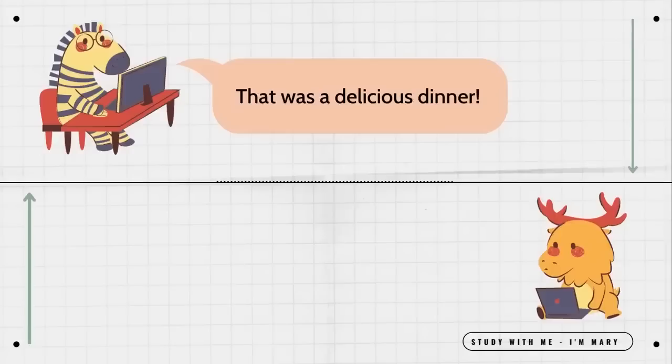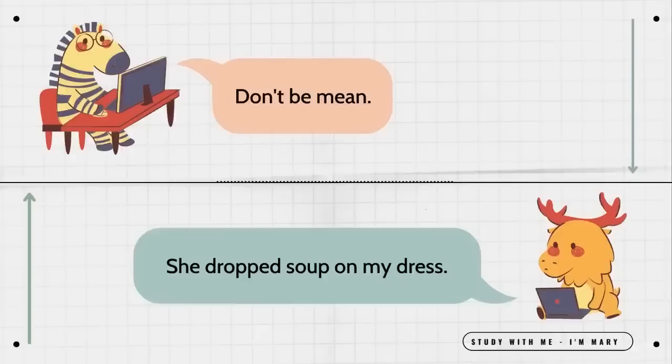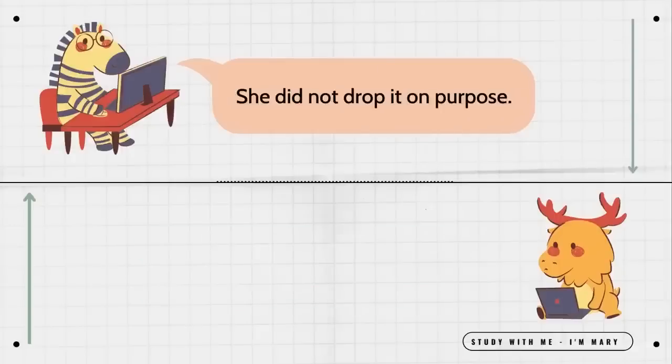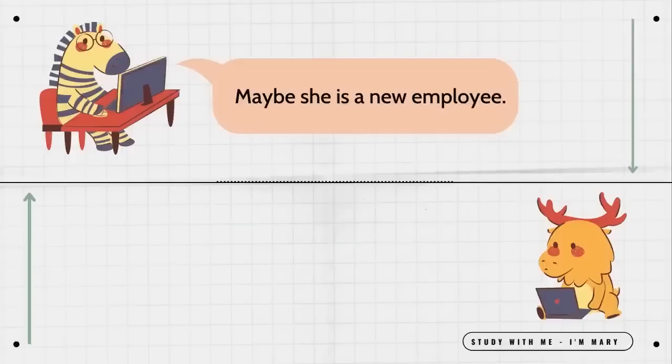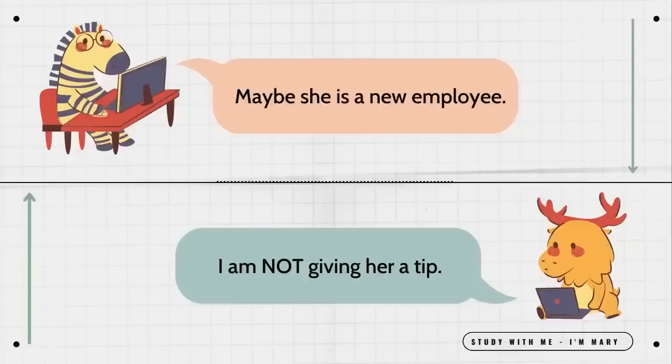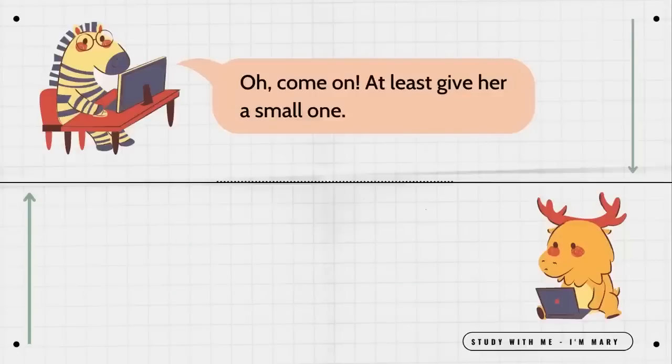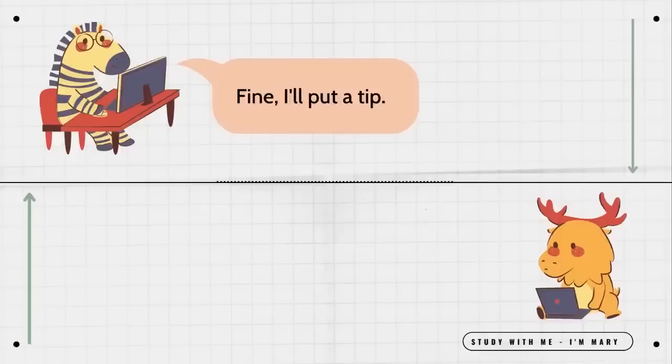That was a delicious dinner. The waitress was bad, though. Don't be mean. She dropped soup on my dress. She did not drop it on purpose. She also took forever to bring out the food. Maybe she is a new employee. I am not giving her a tip. Oh, come on. At least give her a small one. I'm not even going to put a penny. Fine. I'll put a tip. You are way too nice.